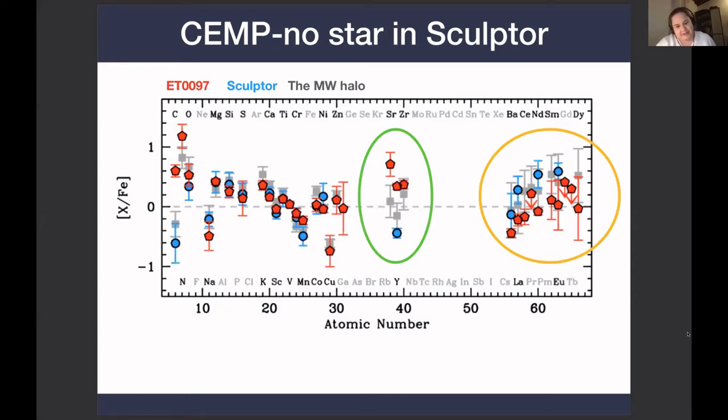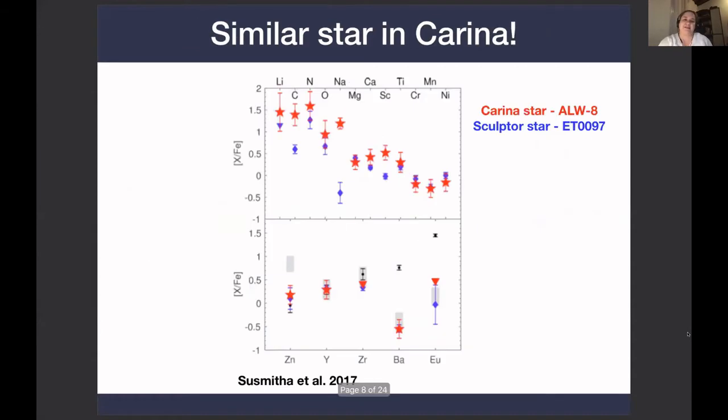And then it turned out that this star was not unique because a couple of years later, a very similar star was found in another dwarf galaxy, Carina. And this is from their paper. So here the colors are switched. The Carina star is in red, and the Sculptor star is in blue. If we focus on the lower panel here, which covers the heavy elements, we can see they have essentially the same abundance pattern.